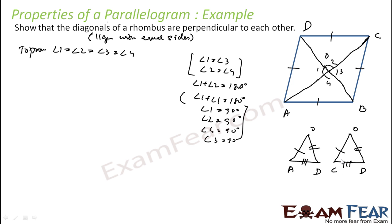So these two triangles are congruent. The angle AOD is angle 1, and angle COD is angle 2. Therefore, angle 1 = angle 2, and thus we can prove our result.